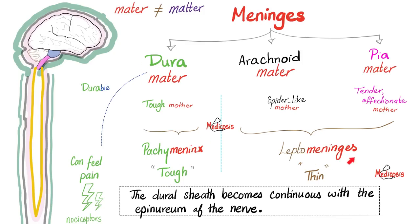The arachnoid mater and pia mater are thin, so they're called leptomeninges — 'lepto' means thin. Anyone remember the hormone leptin? Leptin is a hormone that wants you to become thin; it induces satiety and inhibits hunger. To learn more about leptin, ghrelin, and orexin, please refer to my metabolism playlist.